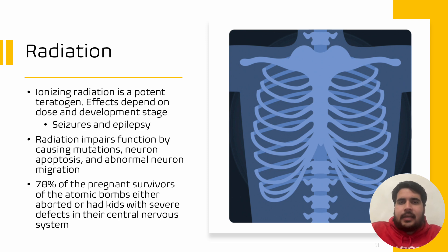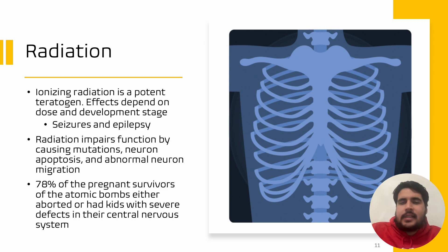Lastly, it is important to note that 78% of the pregnant survivors of the atomic bombs during World War II either aborted or had children with severe defects in their central nervous system, and this really highlights the impacts of radiation.